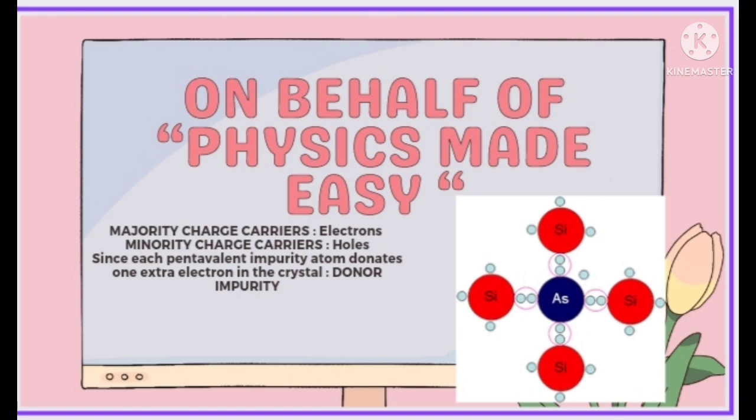This type of semiconductor is called an n-type semiconductor and is one type of extrinsic semiconductor. Since each pentavalent impurity atom donates one extra electron to the crystal, it is known as donor impurity.